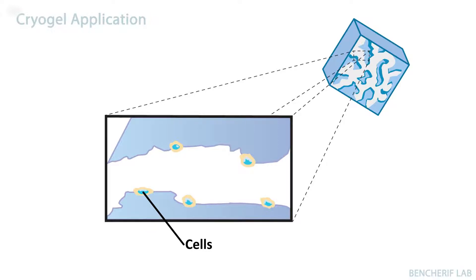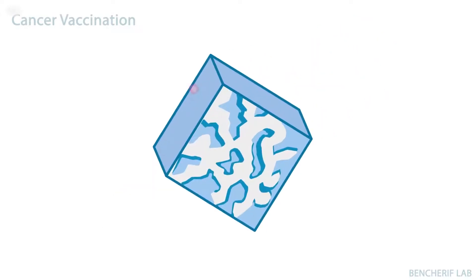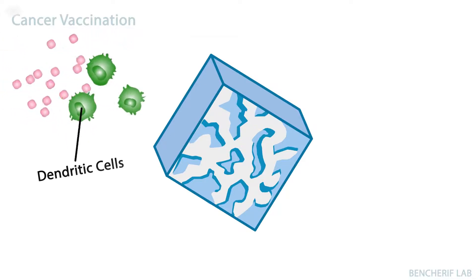For example, injectable cryogels have been used as a training camp to instruct immune cells to kill cancer cells. In this example, cryogels were engineered to controllably release biomolecules such as chemokines. Chemokine release results in the recruitment of antigen-presenting immune cells, mainly dendritic cells.